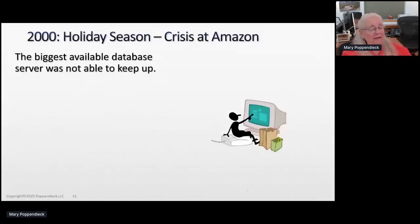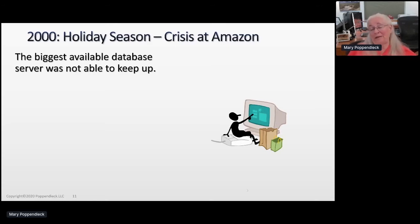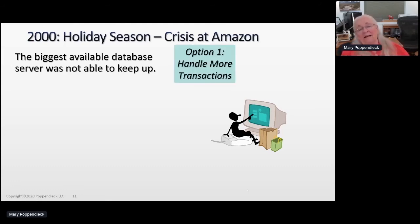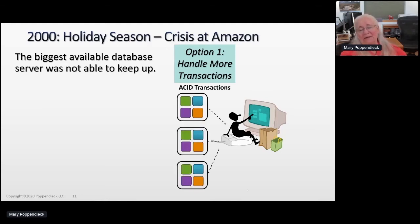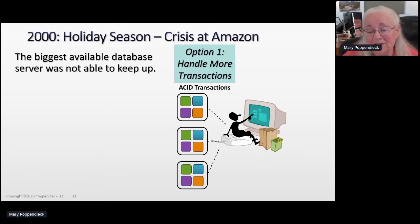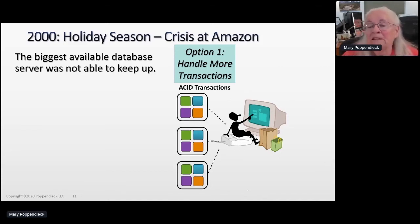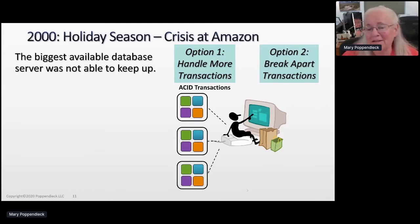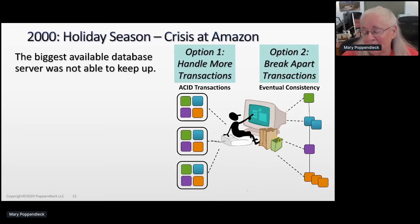At the same time, a crisis was happening at Amazon. They had the classic client-server architecture with a big front-end, big back-end, and the biggest database server in the world — and it could not keep up. At some point, a single server is not going to be able to keep up. They had two choices: handle more ACID transactions — Atomic, Consistent, Isolated, and Durable — somehow, or throw out the ACID transactions and look at eventual consistency, which allowed partitioning. Eventual consistency meant: what if you weren't perfectly consistent? What if you eventually got consistent? Maybe allowing someone to order something that isn't physically on a shelf isn't as bad as completely tying up your system with big ACID transactions.